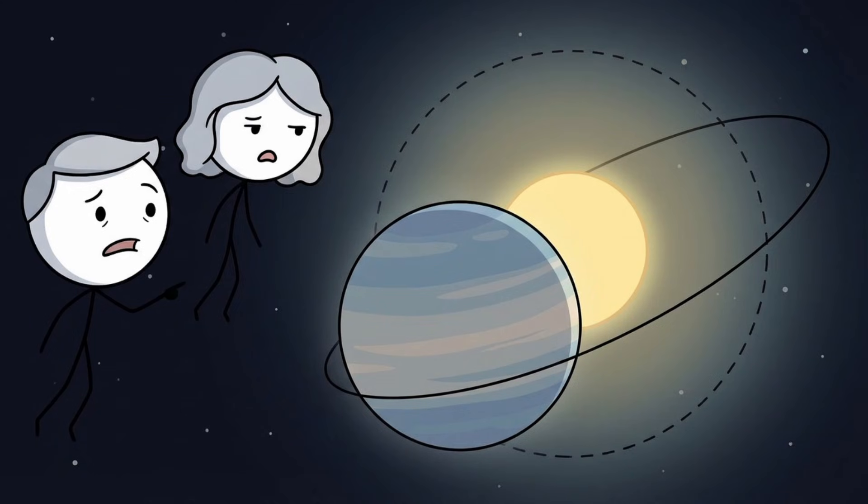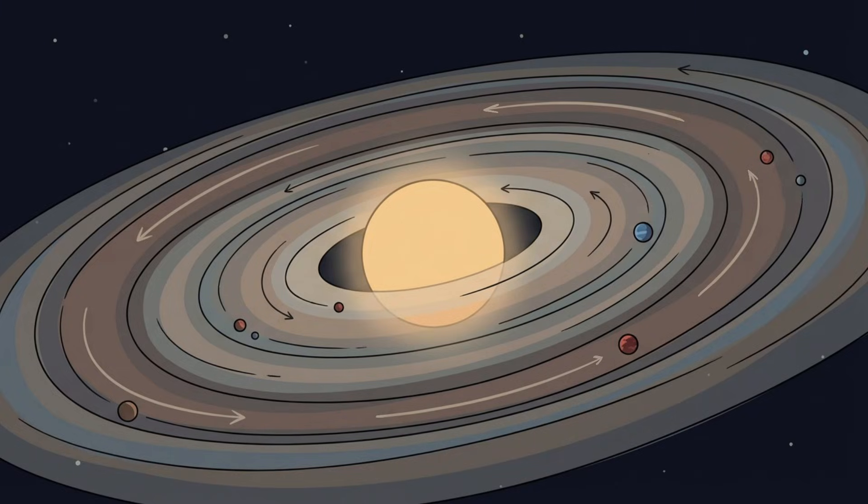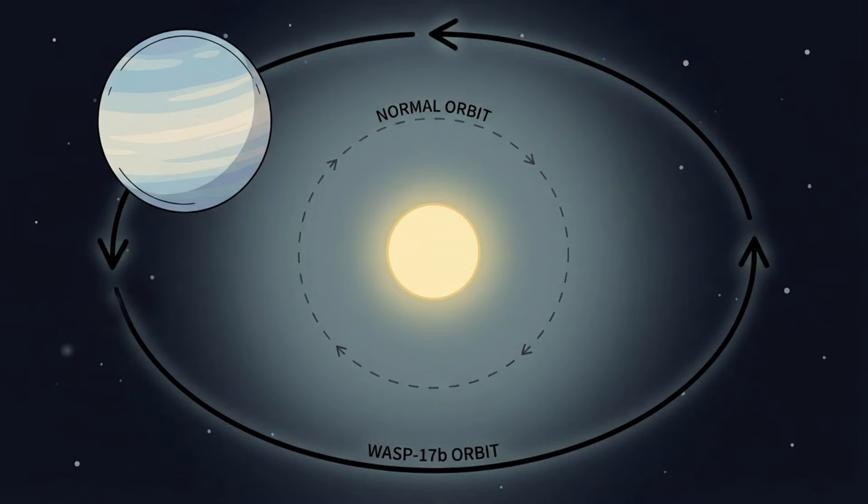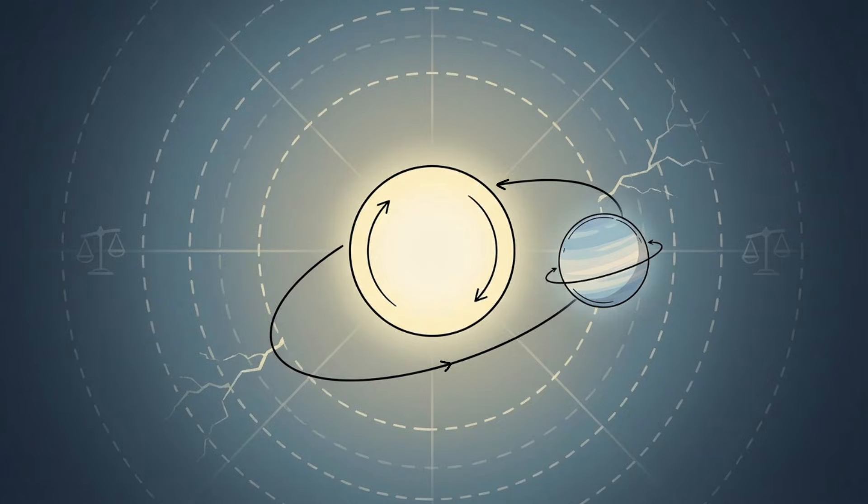This planet does not orbit its star the way planets are supposed to. In our solar system, every planet travels in the same direction as the sun's rotation. This alignment is a leftover from how planetary systems form, spinning out of a shared disk of gas and dust. WASP-17b breaks that rule completely. It orbits in the opposite direction of its star's spin. This is known as a retrograde orbit, and it should not happen in a calm, orderly system.